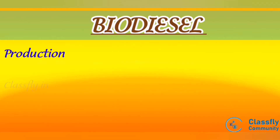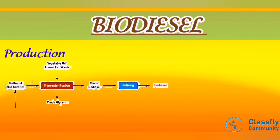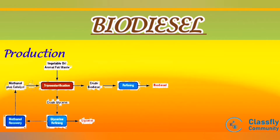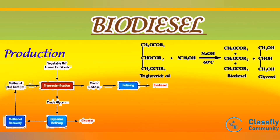Here we can see the schematic diagram of the biodiesel production path. Biodiesel is produced by the transesterification of vegetable oil, animal fat, or blue-green algae with methanol and sodium hydroxide catalyst at 60 degrees Celsius. It is important to note that soap formation is avoided by esterification of free fatty acids in the presence of an acid catalyst, followed by transesterification.